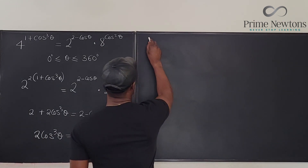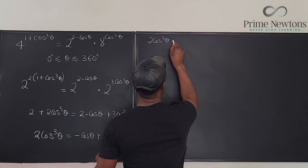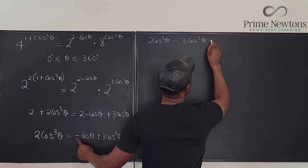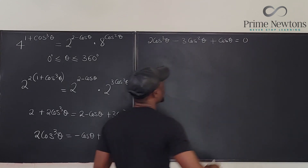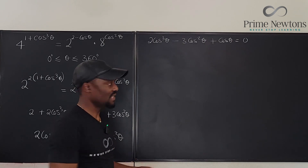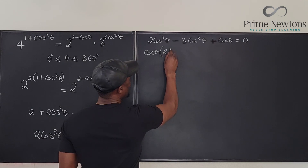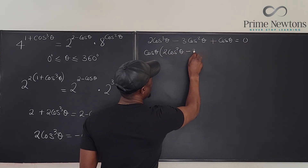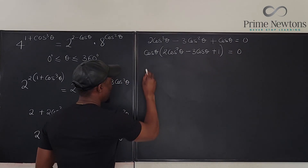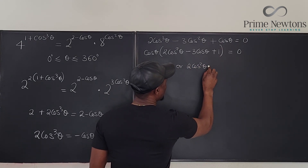Collecting everything to one side gives 2 cosine³θ minus 3 cosine²θ plus cosine θ equals 0. It looks like I can factor out cosine θ, giving cosine θ times (2 cosine²θ minus 3 cosine θ plus 1) equals 0.